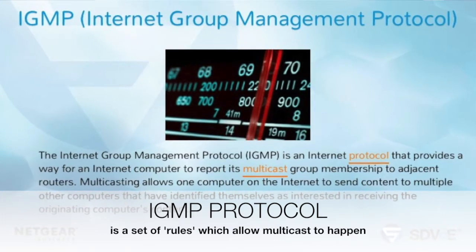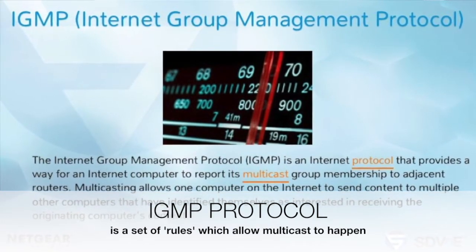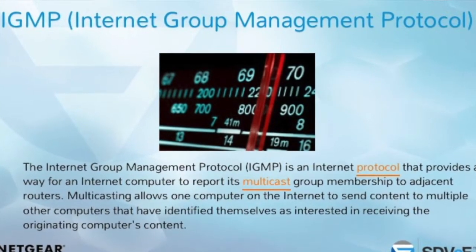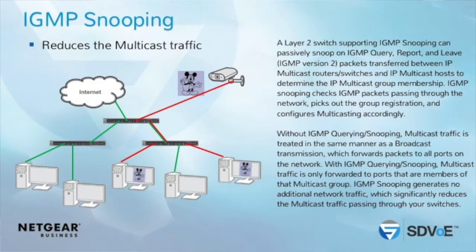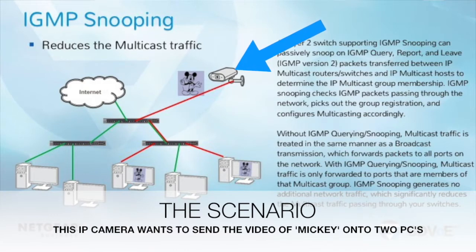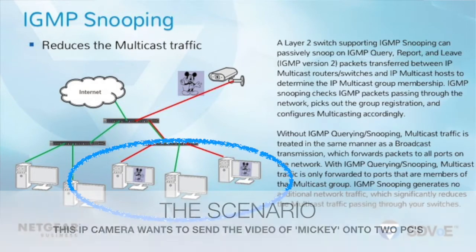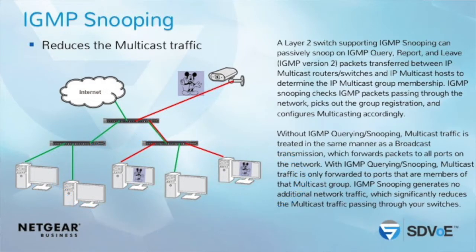Multicast communications need rules, and these rules are called IGMP. The IGMP protocol is the set of rules that really allows multicast communications to happen. For example, you have a typical IP camera, a video source, and you want to send that video to two PCs only. IGMP protocol will let the network understand where that video needs to go.